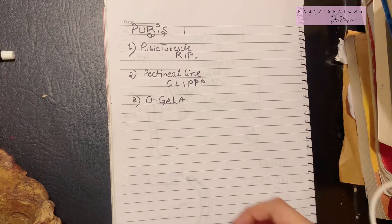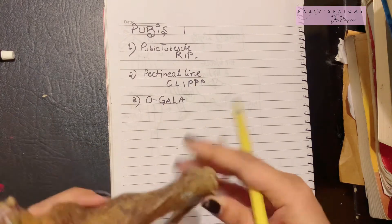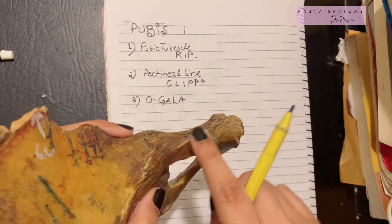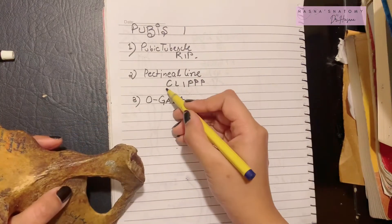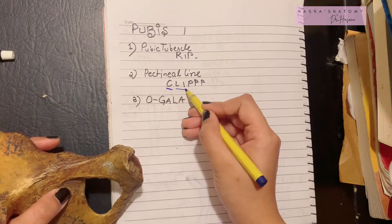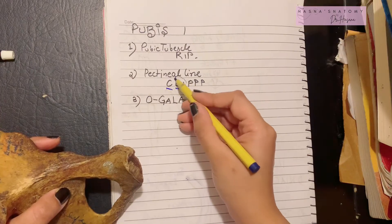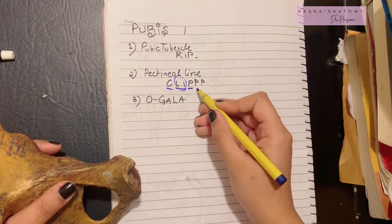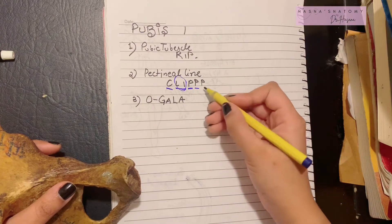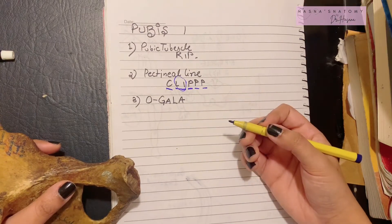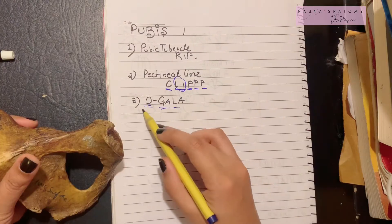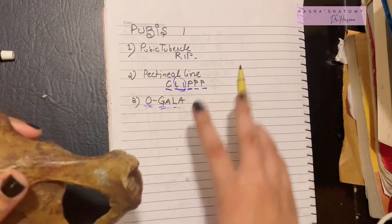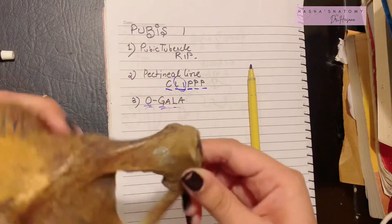Now let's talk about the pectineal line. The mnemonic for this is CLIP. The pectineal line is the origin of very important structures: the conjoint tendon, the lacunar ligament, the pectineus muscle, the fascia covering the pectineus, and the pectineal ligament.